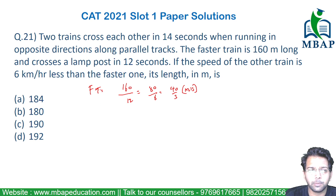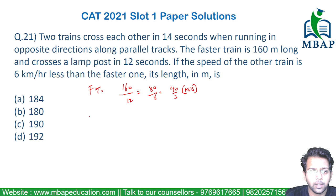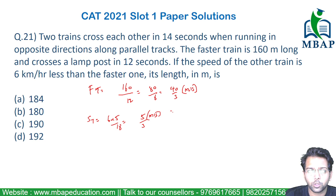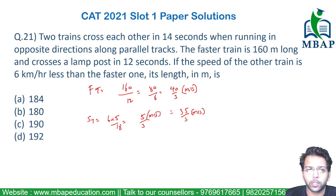Now if the fast train is moving at a speed of 40 by 3 meters per second, the slower train will be 6 kilometers per hour less. Converting: 6 into 5 by 18 will become 5 by 3 meters per second less. So the slower train's speed will be 40 minus 5, which is 35 by 3 meters per second. So I've got the speed of both the trains.